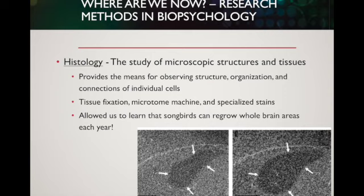So whenever they were getting ready to defend those territories, this brain area would grow larger, as you can see here. Each of these black dots is a whole new cell being developed, and you can see here it's much smaller in the off-season. That led to a whole area of research in humans, showing that humans can also regrow new brain tissue, which has helped us understand strokes and how to help stroke victims recover from injury.